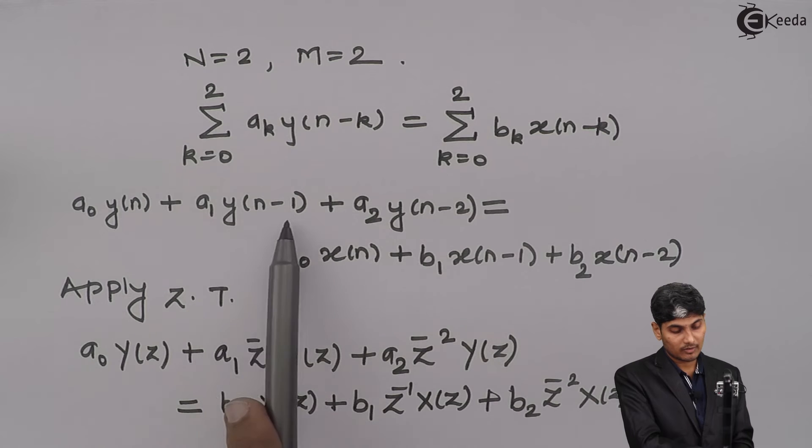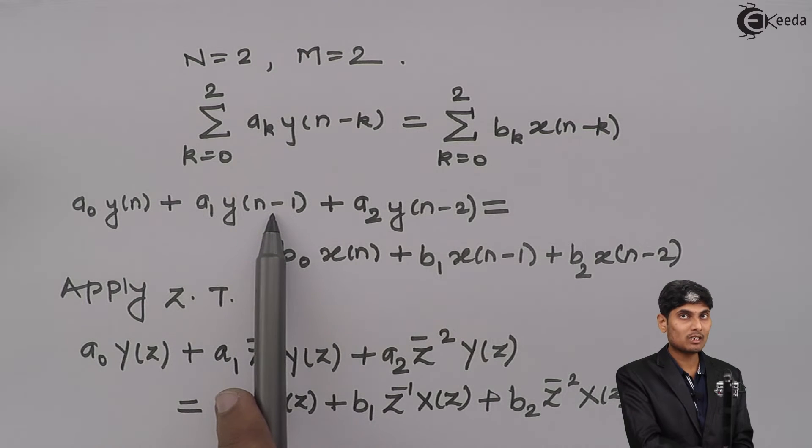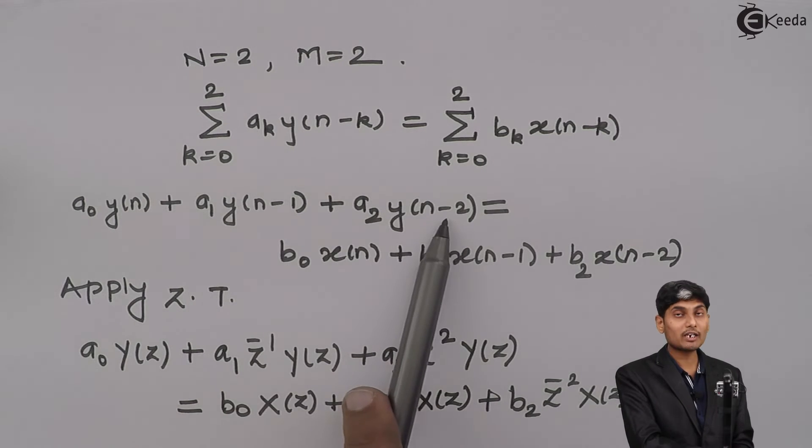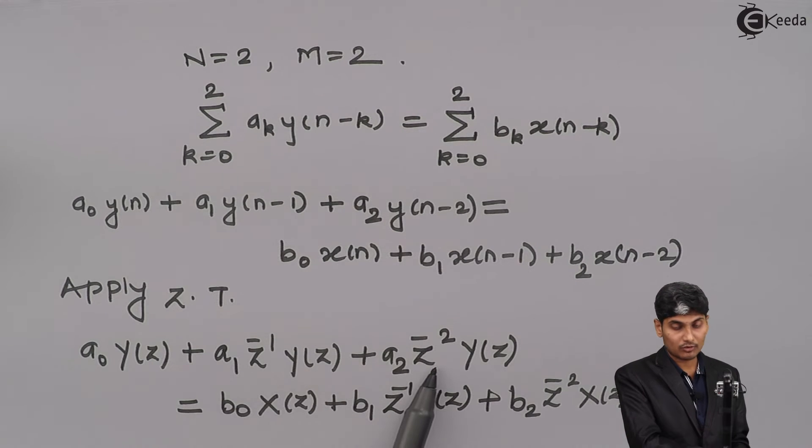The properties used is shifting property: if it is shifted by 1, then I have to multiply by z inverse, shifted by 2, I have to multiply by z raised to minus 2. So, that I did over here.